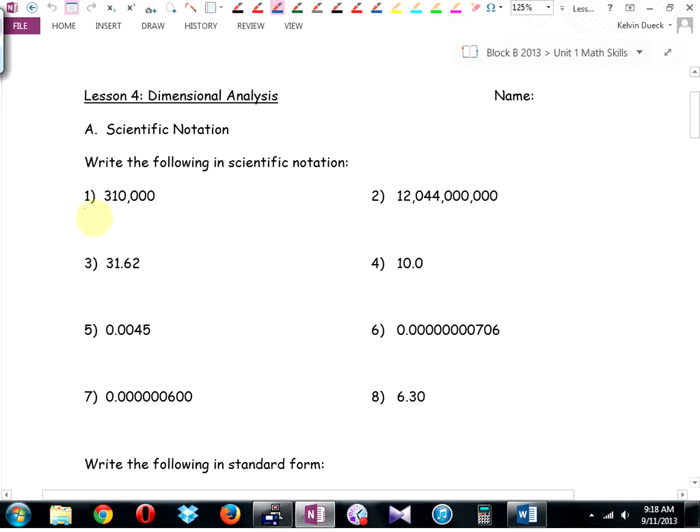Write the following in scientific notation. How would I write this? By the way, how many sig figs is example one there? Two. How would I write it in scientific notation? 3.1 times 10 to the? Five.